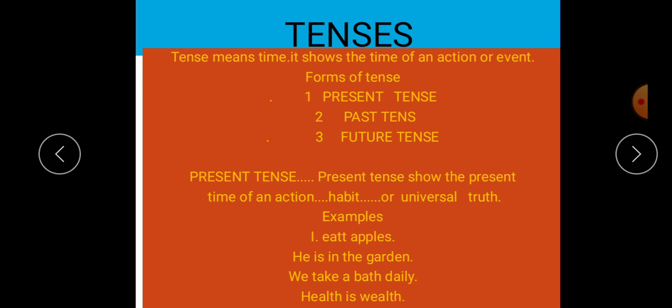Okay kids, dekhiye, humne past aur abhi ka present. Jaise Gerald jo hai present ko usay hi co-present, usay hi kaha jaata hai. Let's learn with examples my dear students.